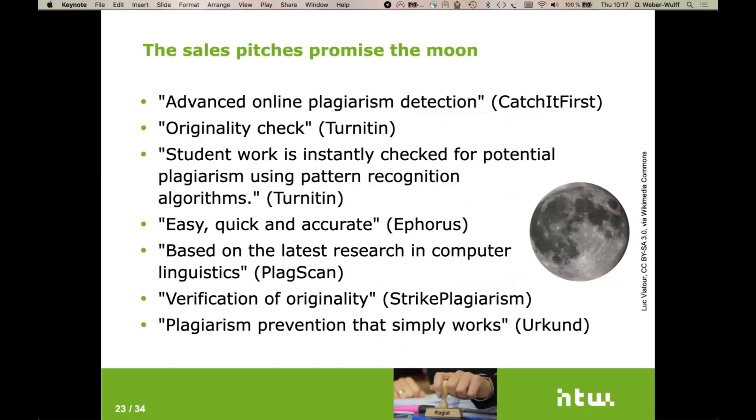You can only show plagiarism by demonstrating the source, but no software system is going to have all publications in their database. They may have a lot, but they're never going to have everything. And so there can be no check for originality. There could only be a check for potential plagiarism. Turnitin also says student work is instantly checked for potential plagiarism using pattern recognition algorithms. This is one of those things from computer science that researchers like to dazzle their listeners. It doesn't make it different if it's just a pattern recognition algorithm. Ephorus, a system that has been purchased by Turnitin, said they were easy, quick and accurate. They weren't.